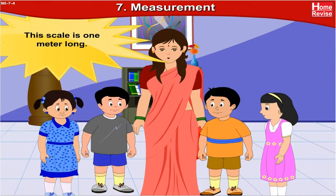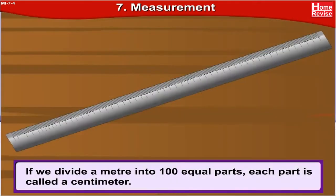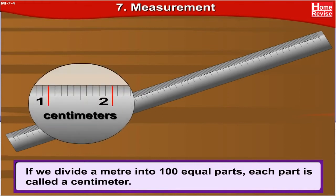This scale is 1 meter long. The meter is a standard unit which is used for measuring length. If we divide a meter into 100 equal parts, each part is called a centimeter. So, 1 meter is equal to 100 centimeters.